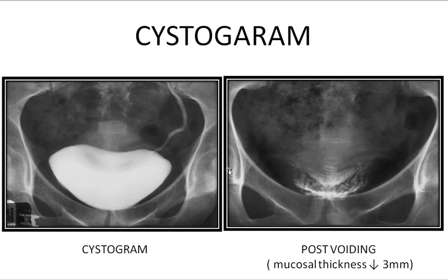After voiding, there should be no residual urine, as the bladder should be completely emptied. If there is residual urine, this indicates poor emptying power of the bladder, as seen in bladder outlet obstruction. The second radiological sign on the voiding film is the wrinkles or folds of the mucosa. These folds should not exceed three millimeters; if the mucosa exceeds this thickness, it indicates cystitis or early bladder epithelial tumors.